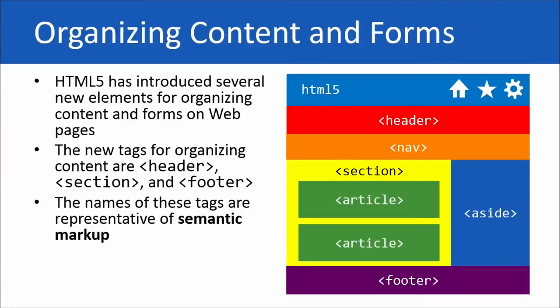HTML5 has introduced several new elements for organizing content and forms on web pages. We've got some new tags: a header tag, a nav tag which stands for navigation, a section tag, an article tag for articles like you'd find in a newspaper, an aside — sort of like an aside conversation — and then a footer for content like copyrights and published dates. These tags are all part of semantic markup or semantic HTML. Semantic just means meaning.